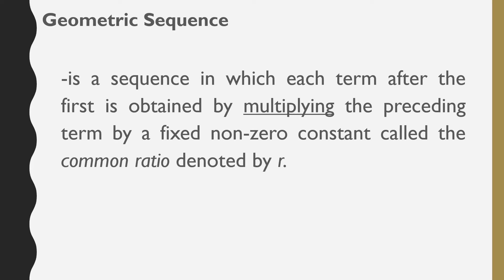A geometric sequence is a sequence in which each term after the first is obtained by multiplying the preceding term by a fixed non-zero constant called the common ratio, denoted by R. The formula to solve for R is equal to a sub 2 divided by a sub 1, or the second term divided by the first term.